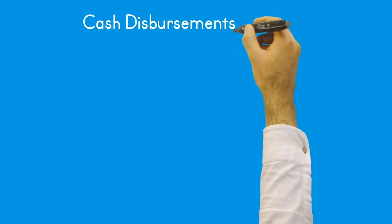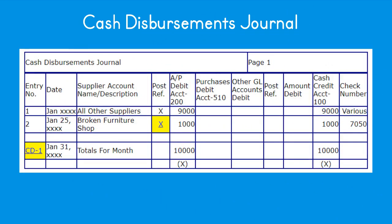The cash disbursements journal has these basic features: header with journal name and page; debit and credit columns for the transaction amount; check number reference column; date column; description column for the payee/supplier name and additional information; entry number; posting reference for subsidiary ledger updates; columns for each regularly occurring type of payment or expense and a column for cash; and a special other debits column with posting reference for any transactions that don't have their own debit account special column.